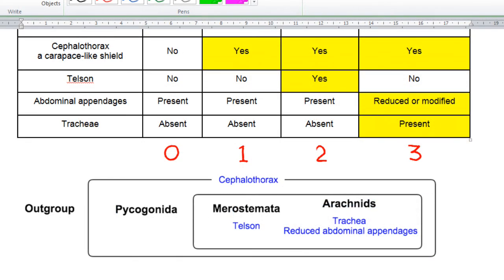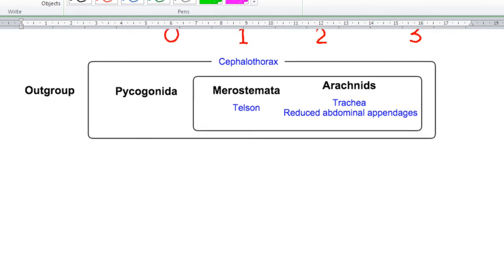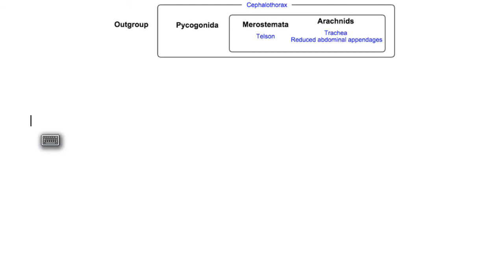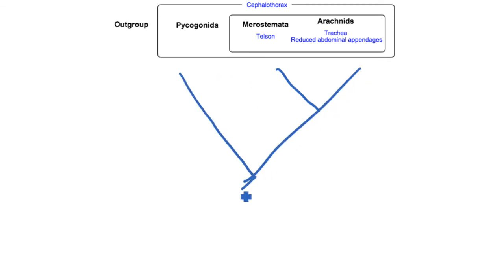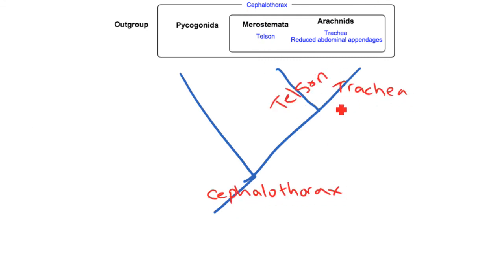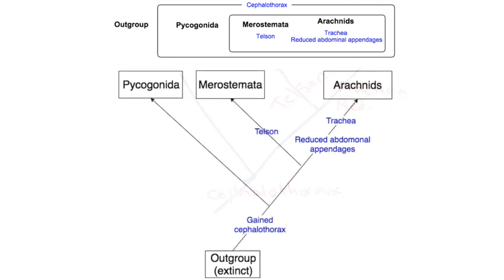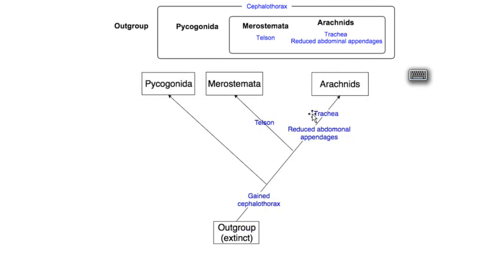It now becomes quite an easy job to create the cladogram from this Venn diagram. From the Venn diagram, we can see that these two are the most related, followed by these. We can then add the features that we base this cladogram on. We can tidy this up so it looks like this, where we can see the features that it's based on.